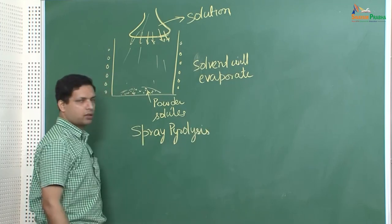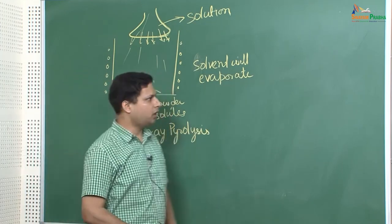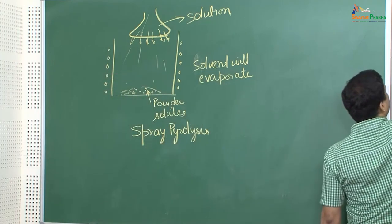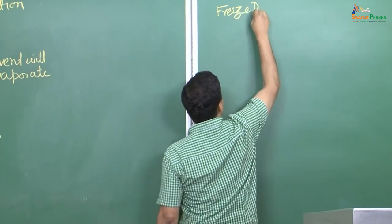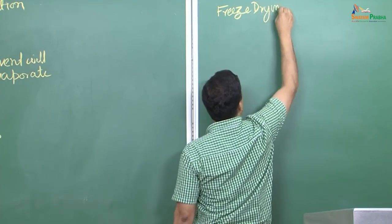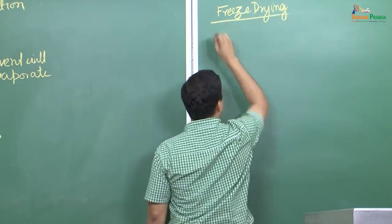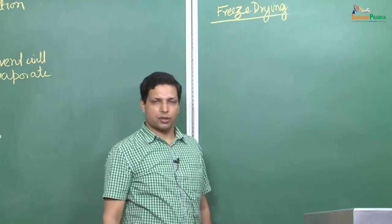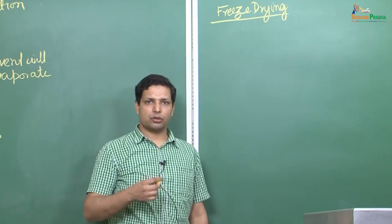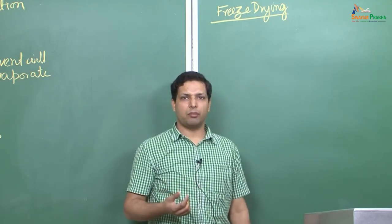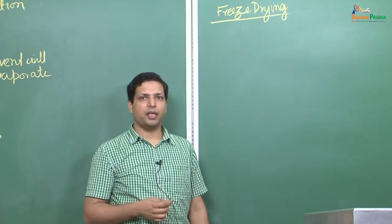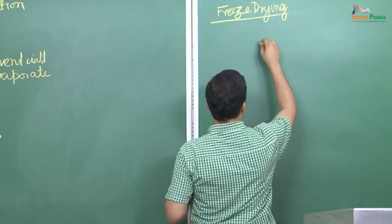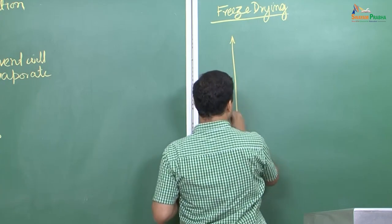Another technique which is similar in some ways but very different in principle is freeze drying. Here the aim is that you first freeze the solution and then decrease the pressure so that the liquid, which is the solvent, is able to sublimate. So instead of evaporating, it is sublimating, and therefore you are able to get just the solute.